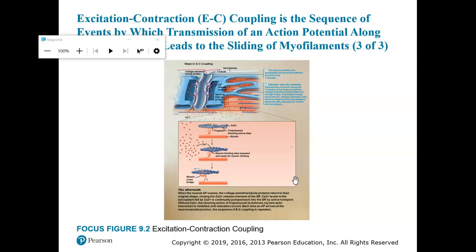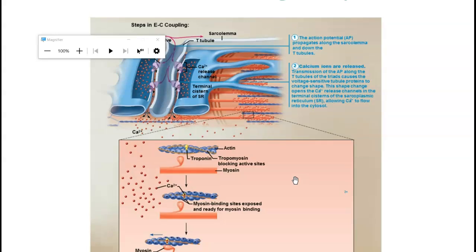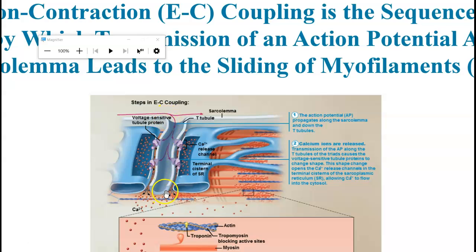Let's talk about what happens to cause the muscle contraction to actually occur. It is called excitation-contraction coupling. What we're looking at is a magnified version of a triad — here's your T-tubule.